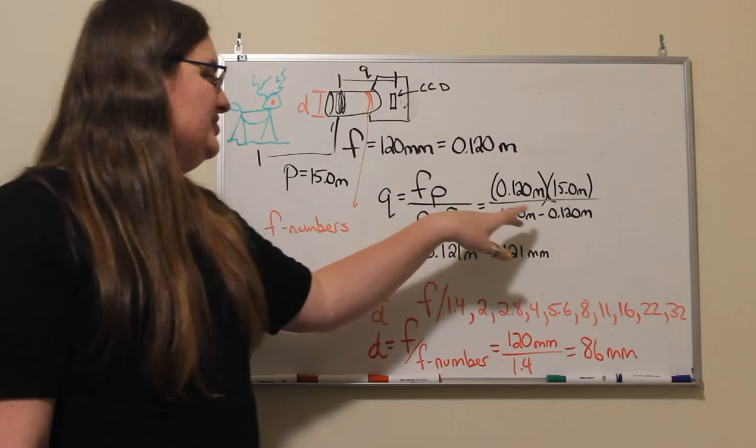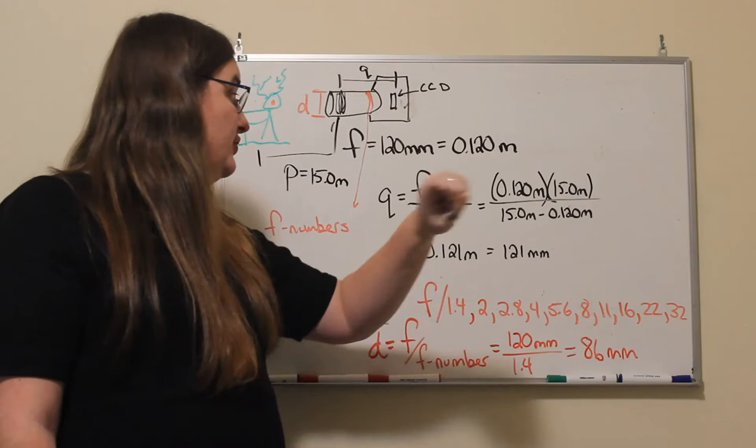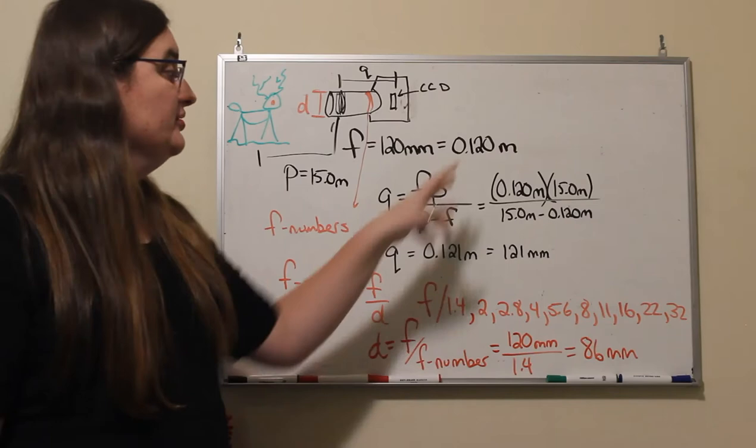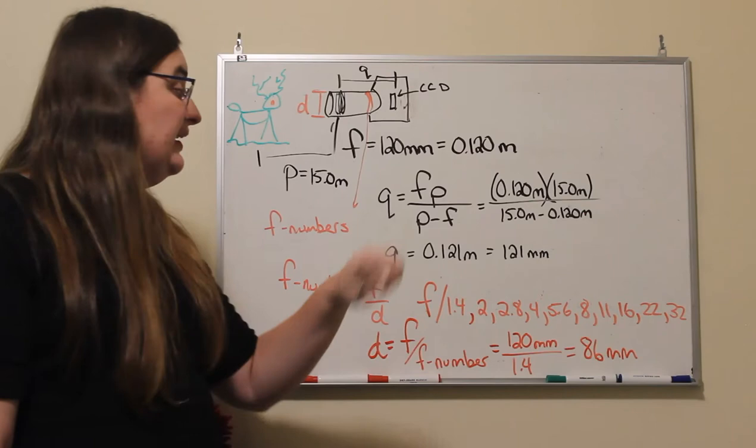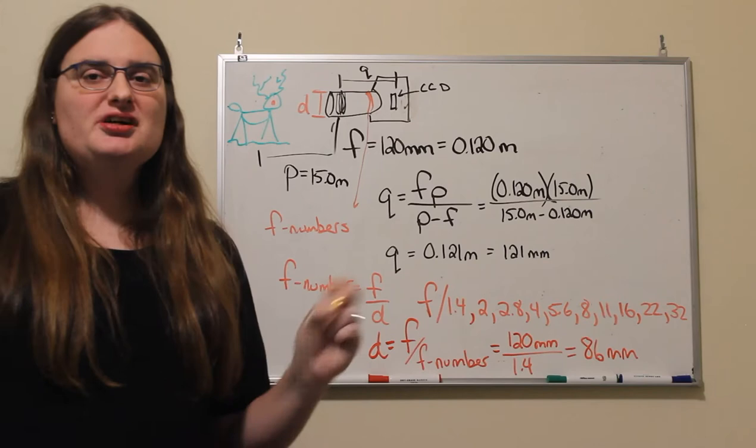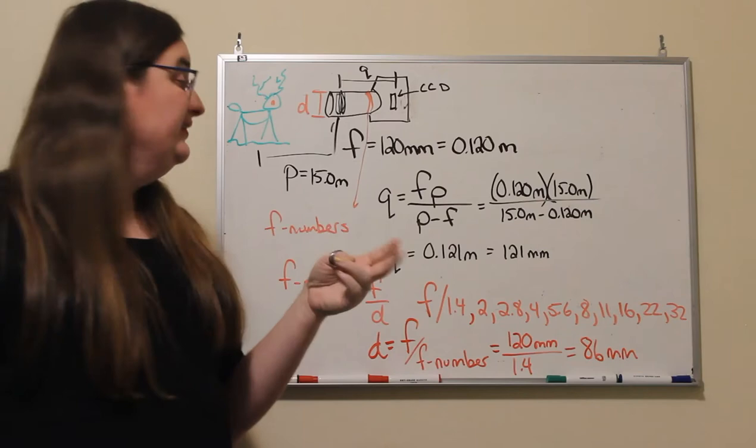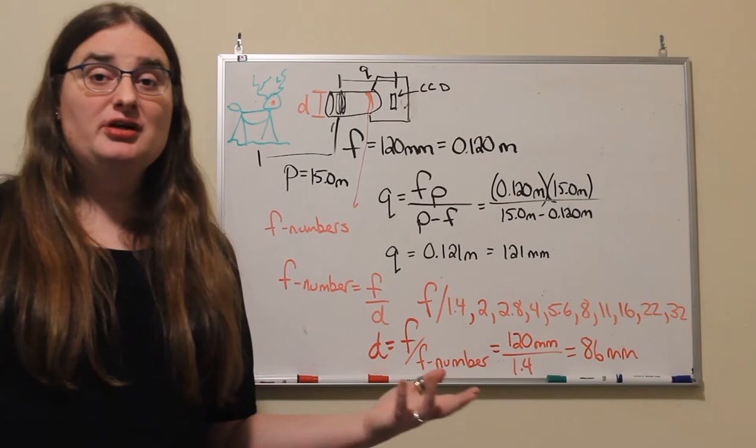Which is really close to 15 over 15, so it's not going to be a huge difference from our focal length. When I take 15 divided by 14.88 meters, multiply it by 0.120 meters, I get 0.121 meters, 121 millimeters. So it doesn't have to move much to take something that instead of infinitely far away is 15 meters, which is about 50 feet away. Now the closer it gets, the farther away that lens would have to move to form a focused image, and if it gets too close you're not going to be able to do it.